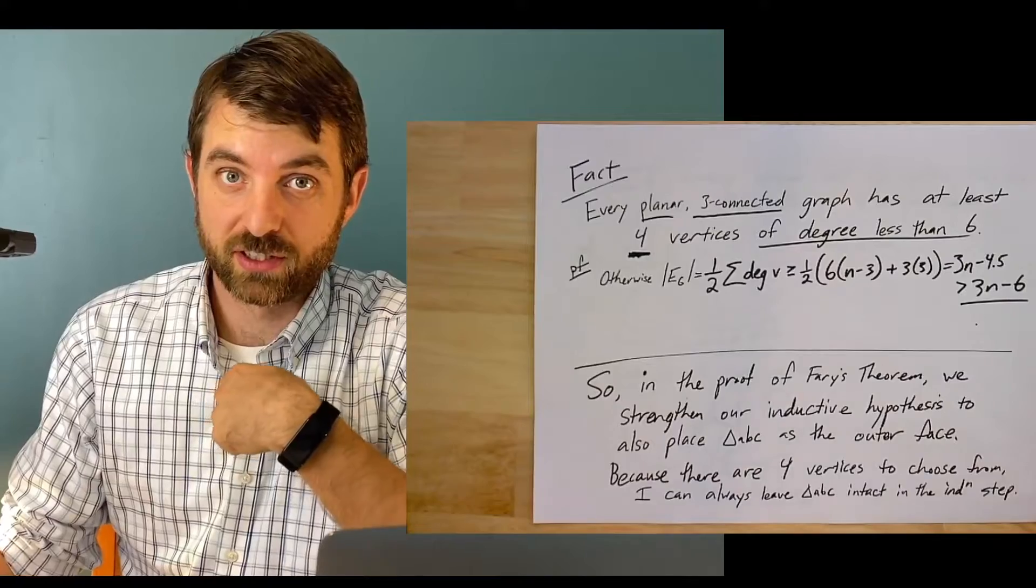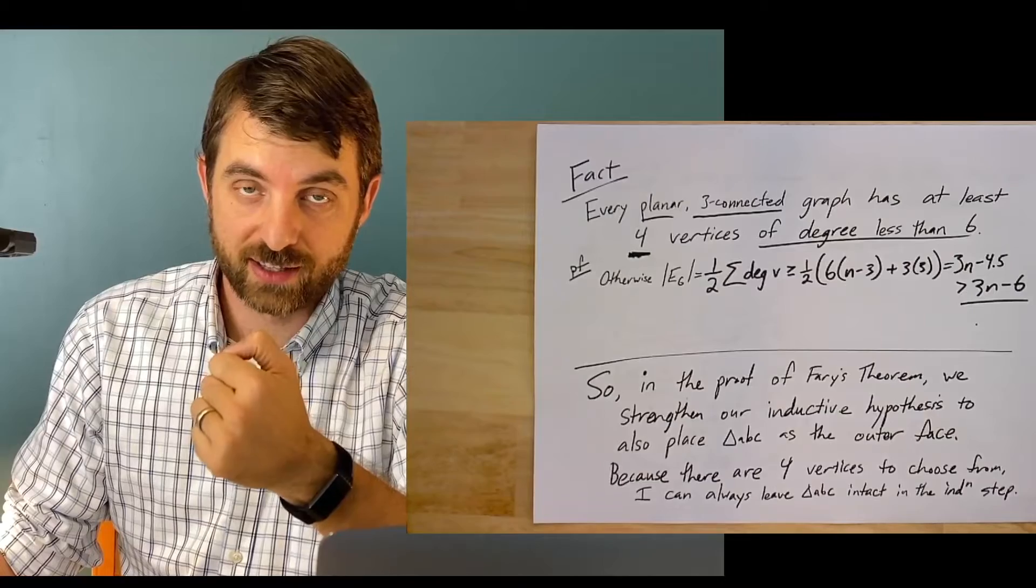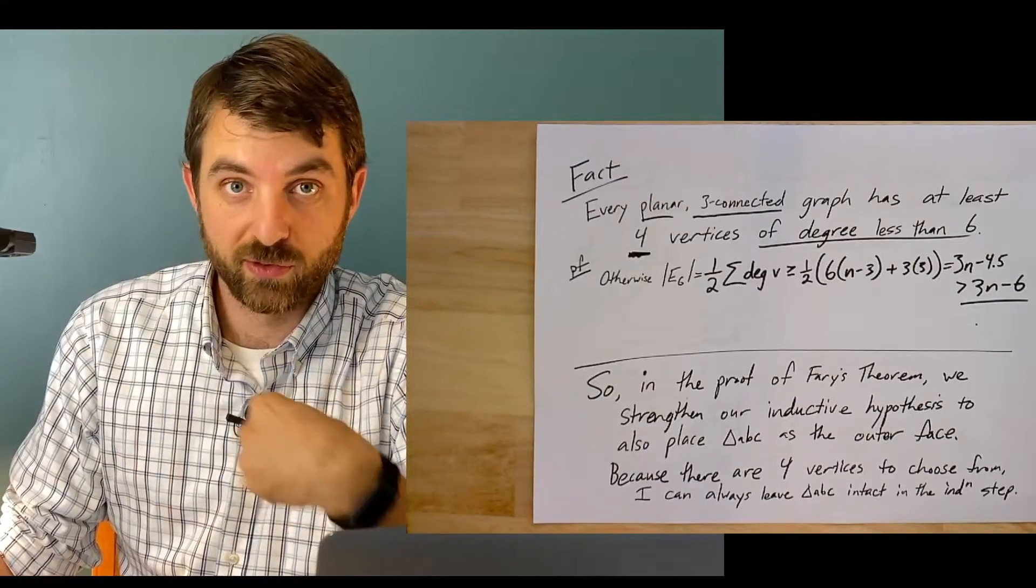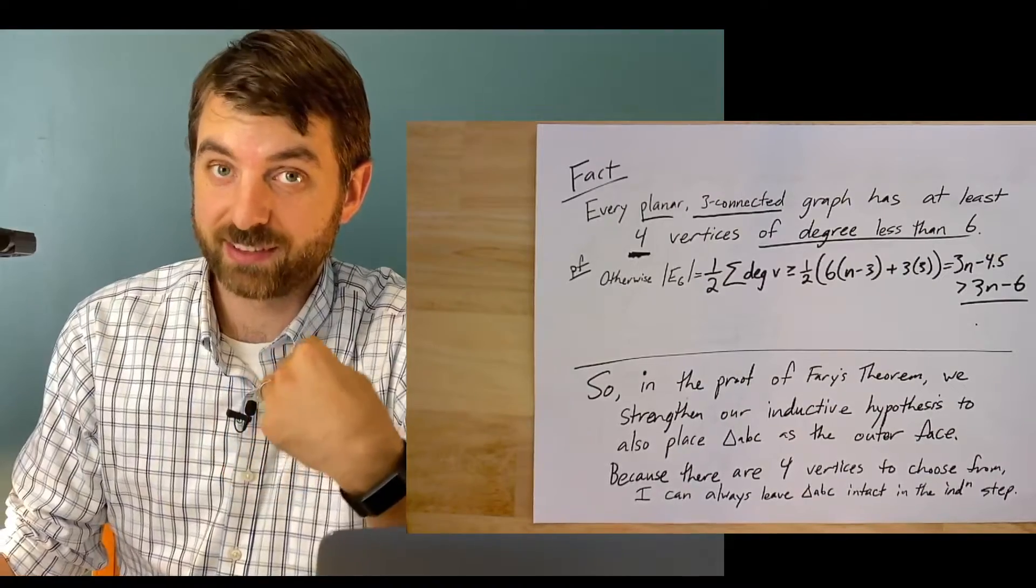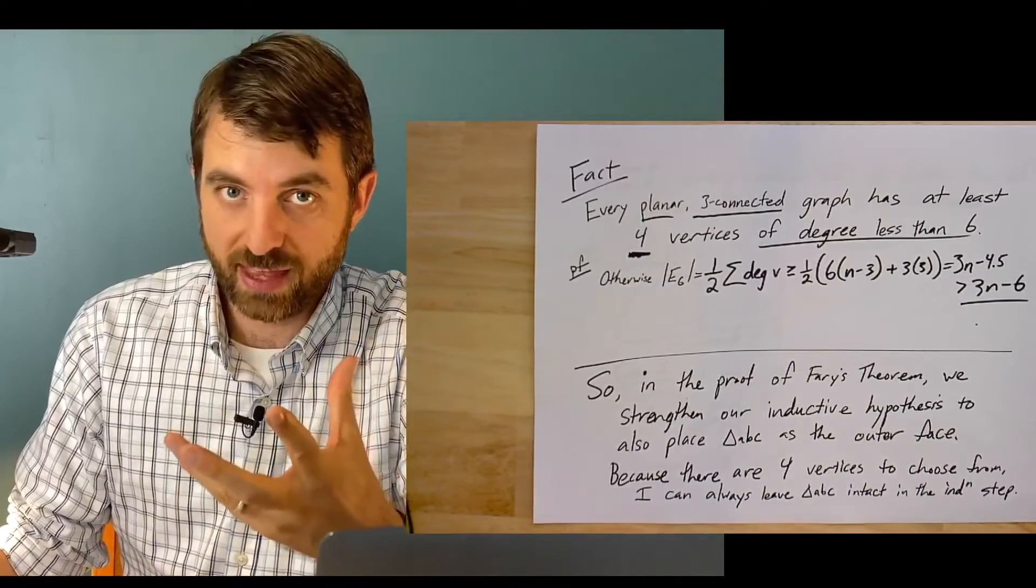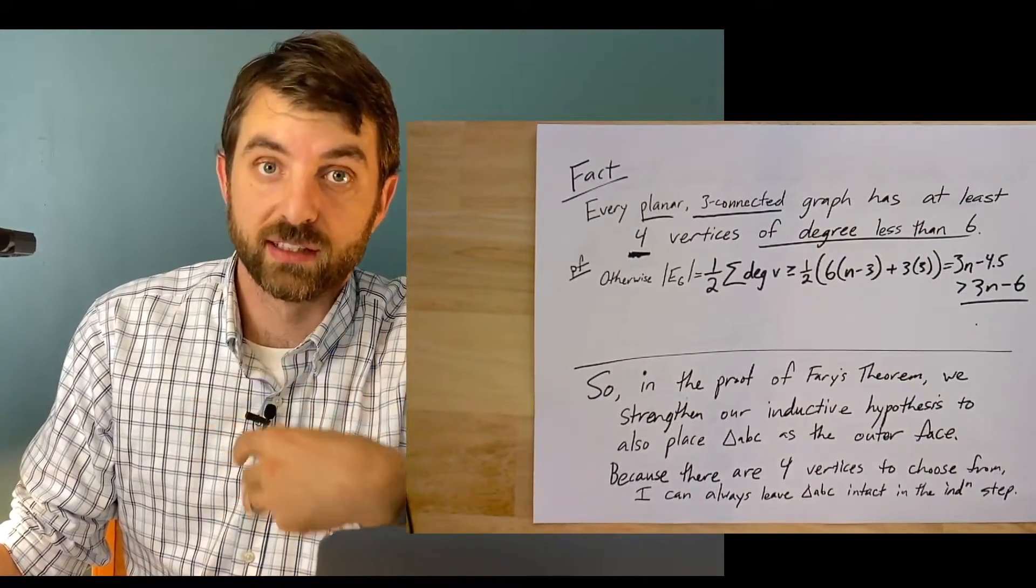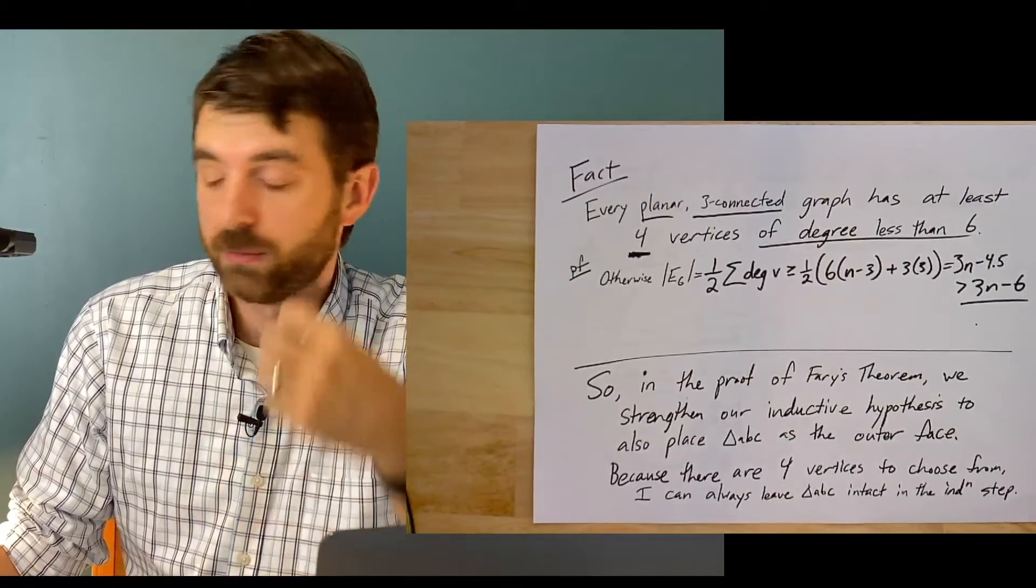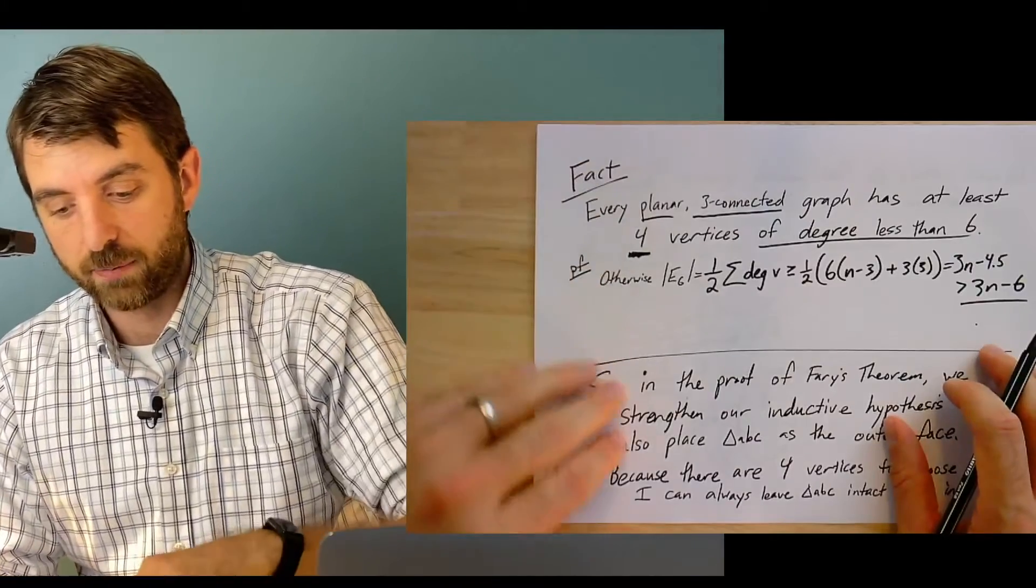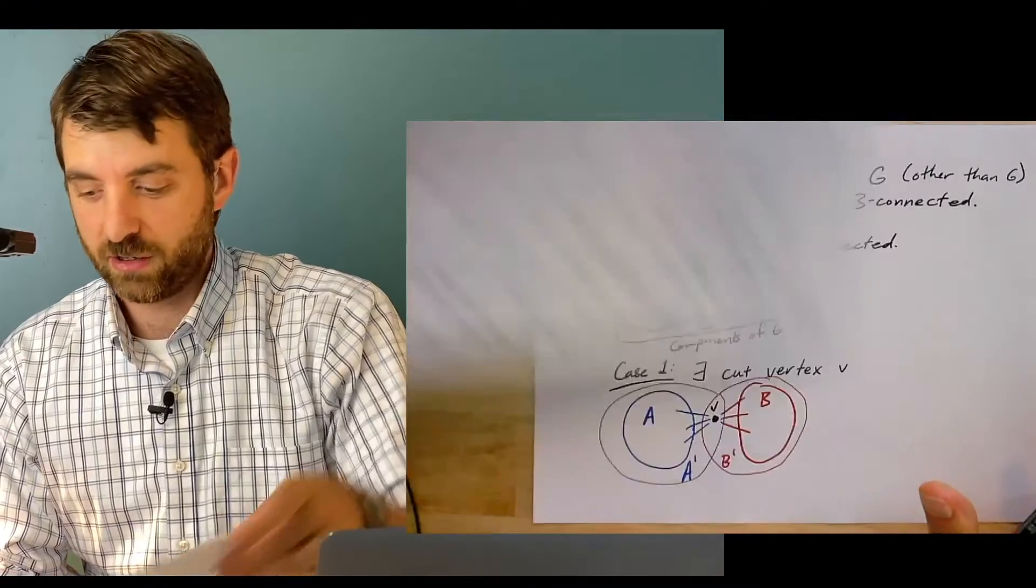It means that when we do our induction, by induction we suppose that there exists an embedding with a given triangle as the outer face. Since when we remove a vertex we didn't remove A, B, or C, we still have that triangle A, B, C. So inductively we embed that as the outer face, and then the new vertex that gets added is added somewhere on the inside. And so we still have A, B, C as the outer face. That's how we get our extension to Fary's theorem.